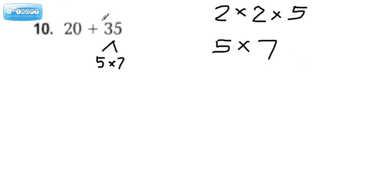When you're finding the GCF of two numbers, you're looking for matches in the two prime factorizations. So we see a match right here, and that's the only one. So that means the GCF of 20 and 35 is 5.